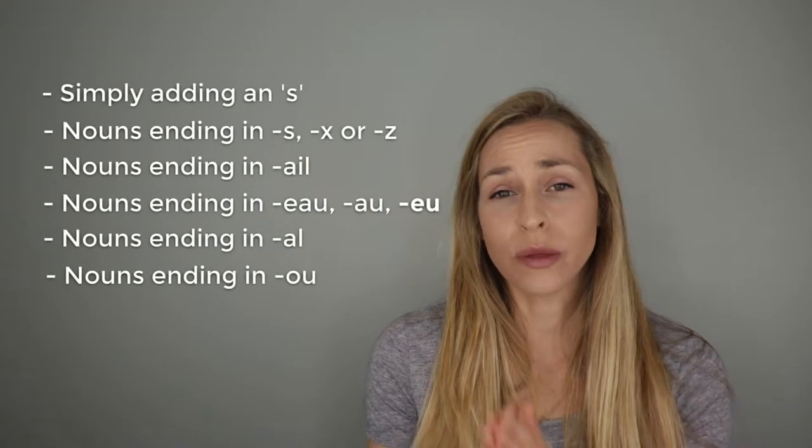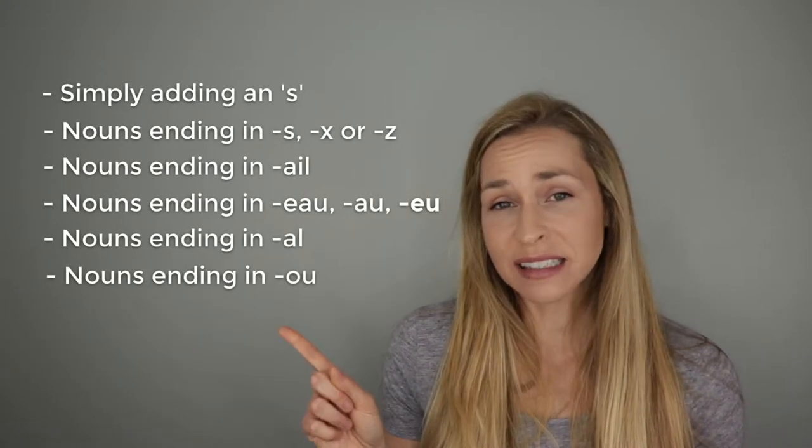The most common way to form a plural for a noun in French is to simply add an S. But there are definite variations to this rule — depending on how your noun ends, what the last few letters of the word are, there might be a variation in the way we form the plural. We're going to go over the most basic one first, which is to simply add an S.